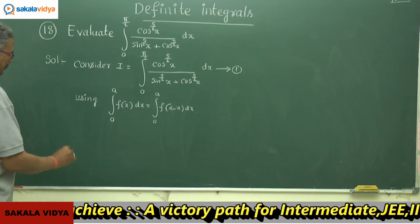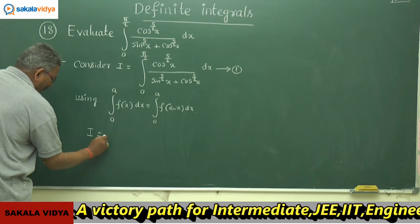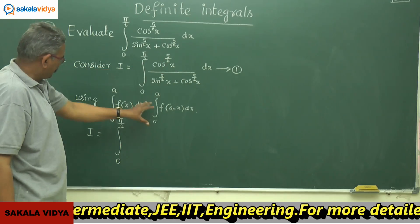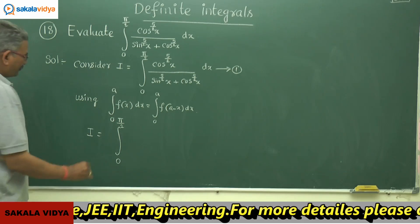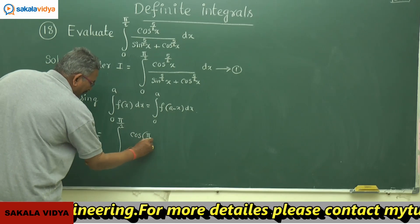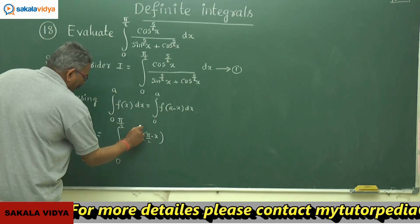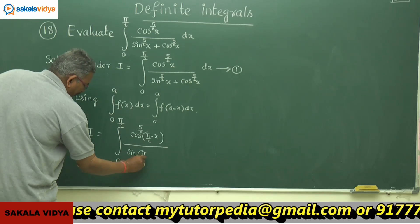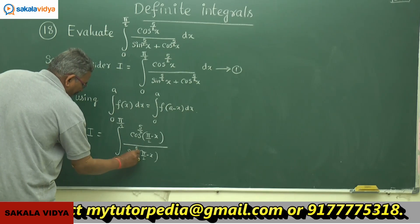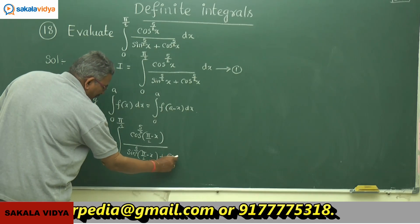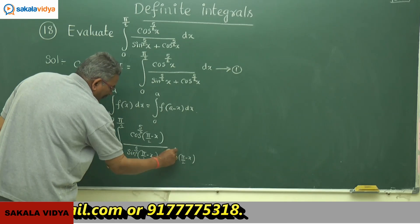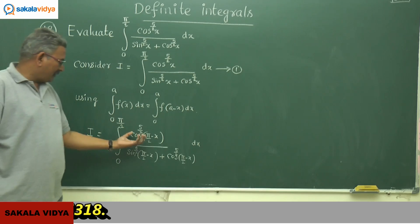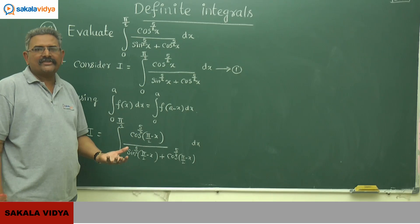Equation 1 can be written as: I equals the integral from 0 to π/2, where x is replaced by π/2 − x. So we get cos(π/2 − x)^(5/2) in the numerator, divided by [sin(π/2 − x)^(5/2) + cos(π/2 − x)^(5/2)] dx. You know that sin(90° − x) = cos(x), and cos(90° − x) = sin(x).